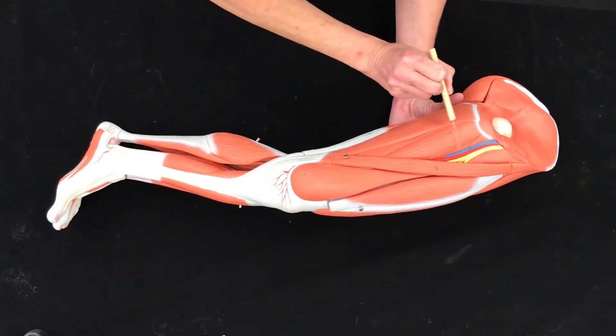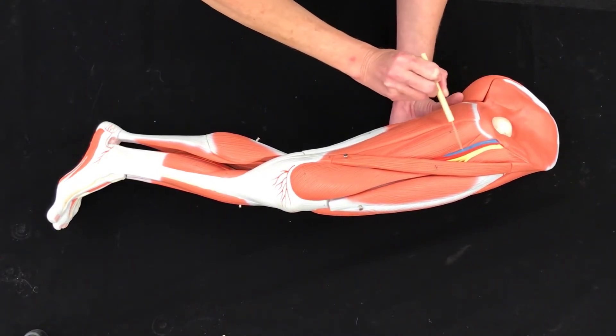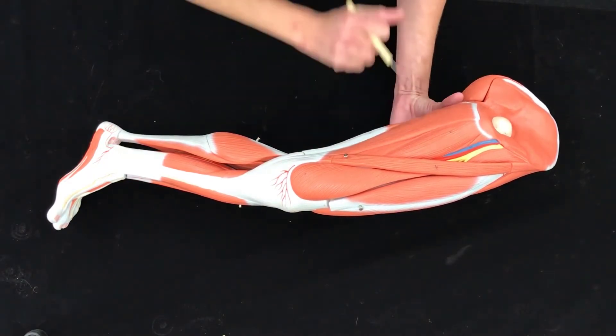Now as you can see, we have a femoral artery, femoral vein, femoral nerve that are all very close to the surface. So you avoid this area.